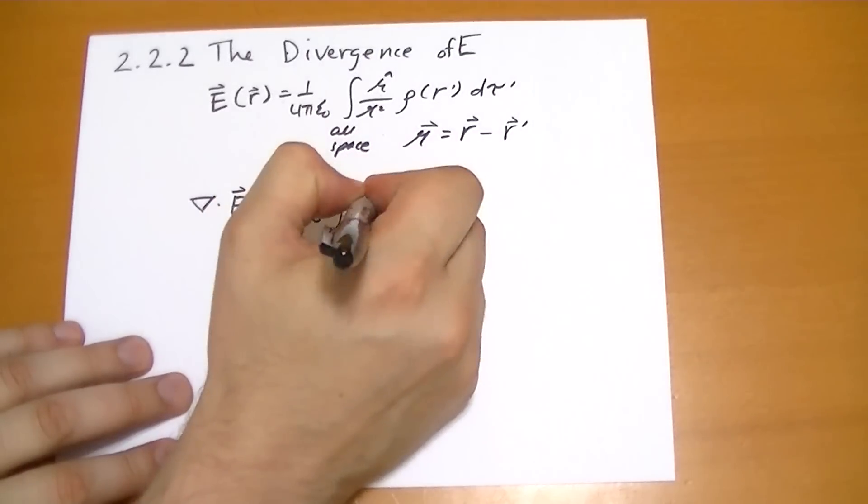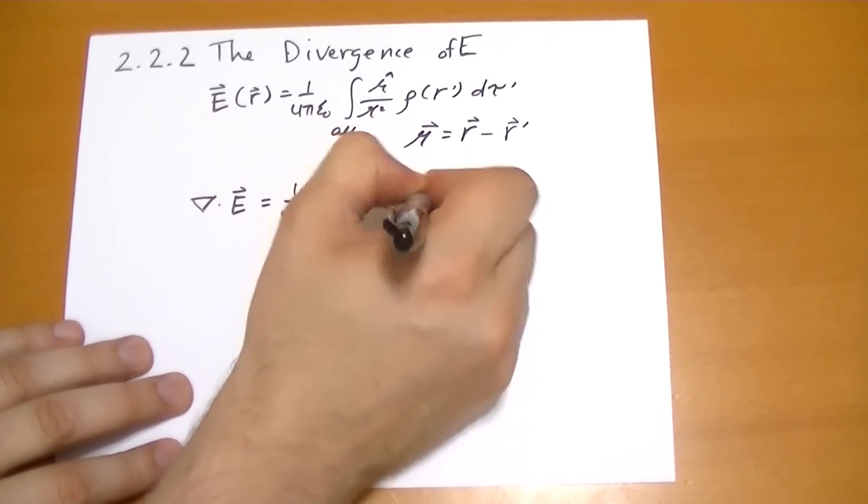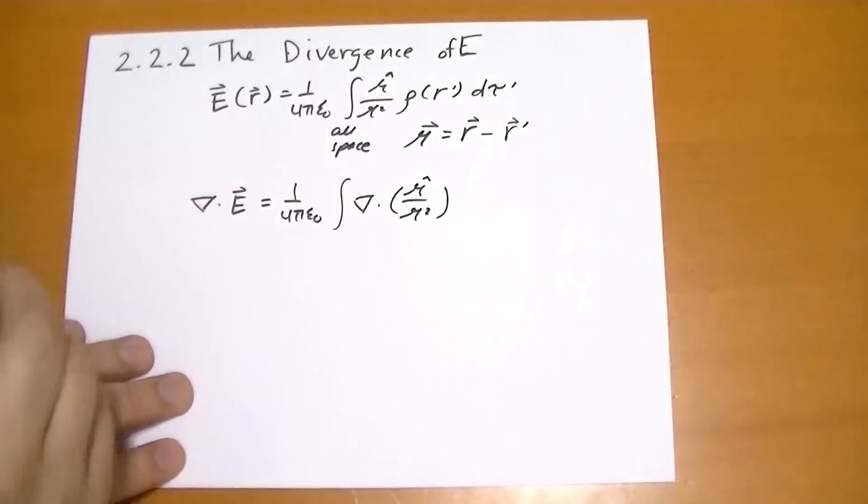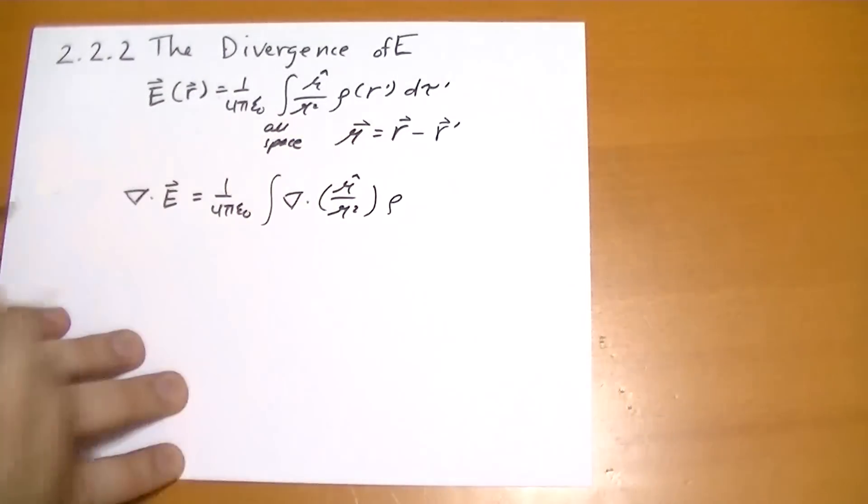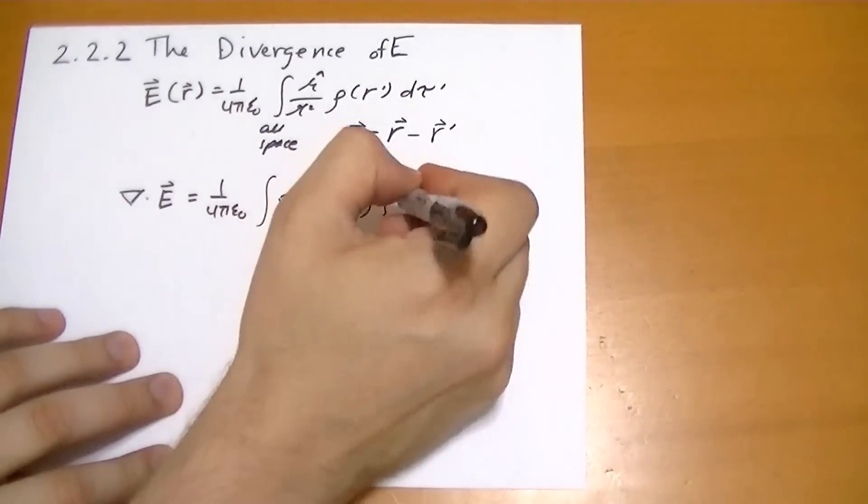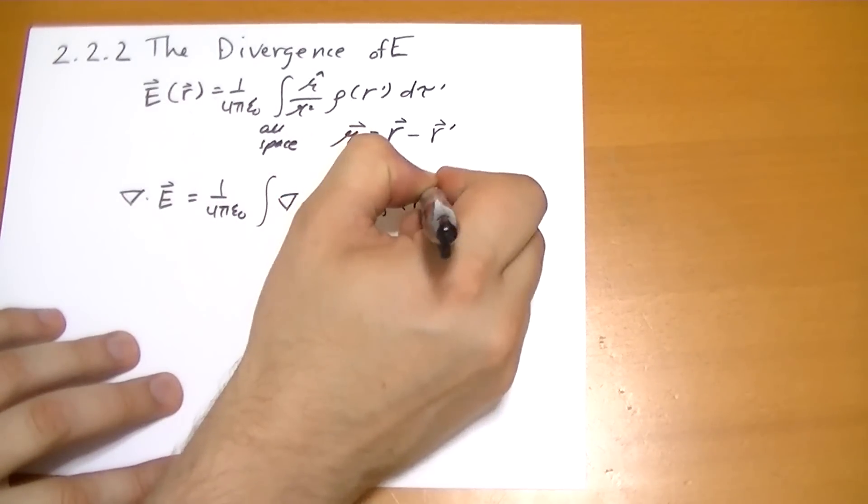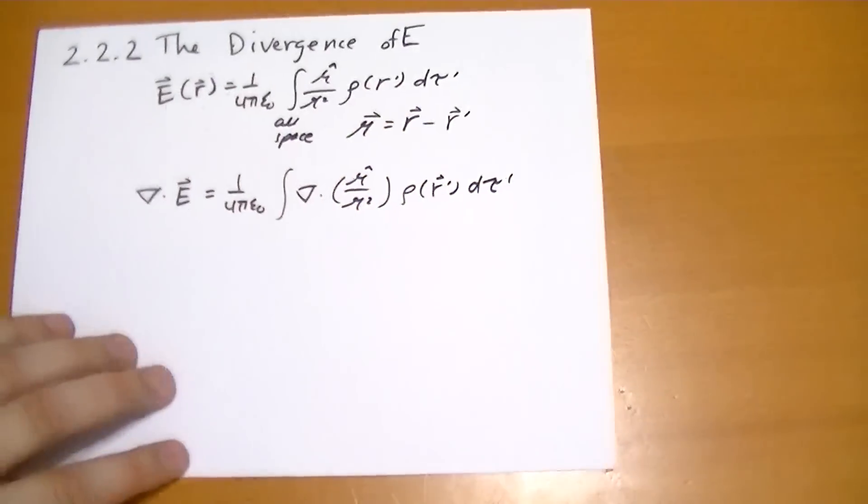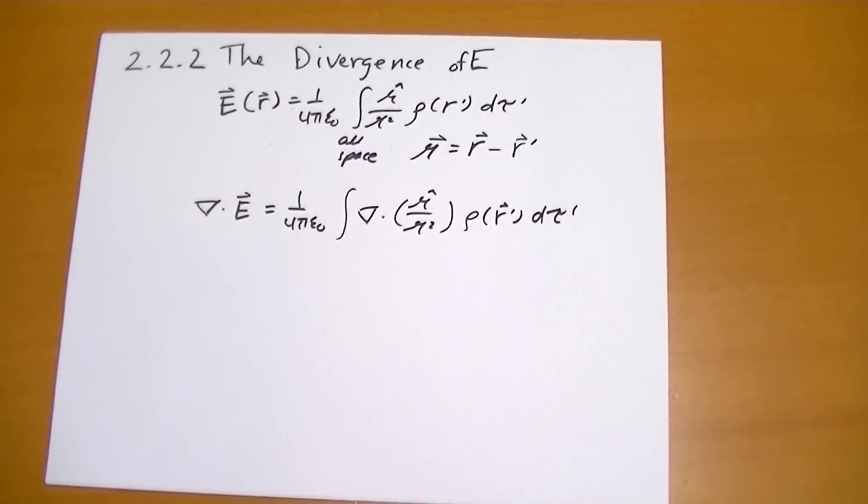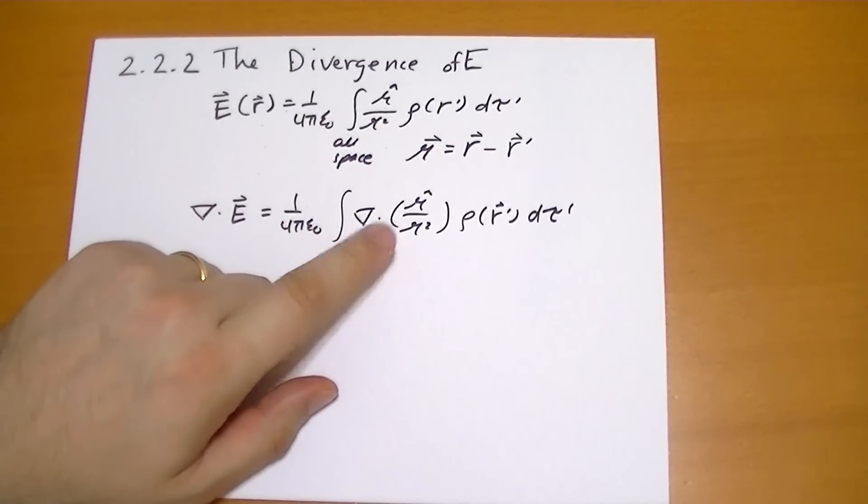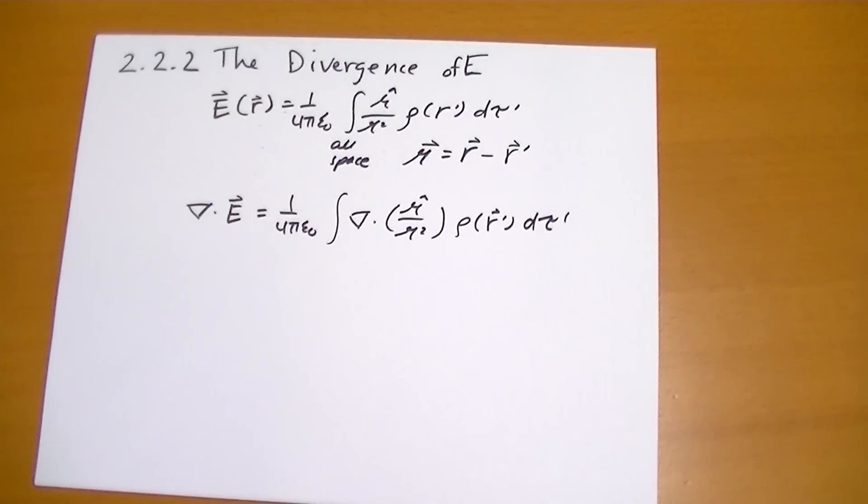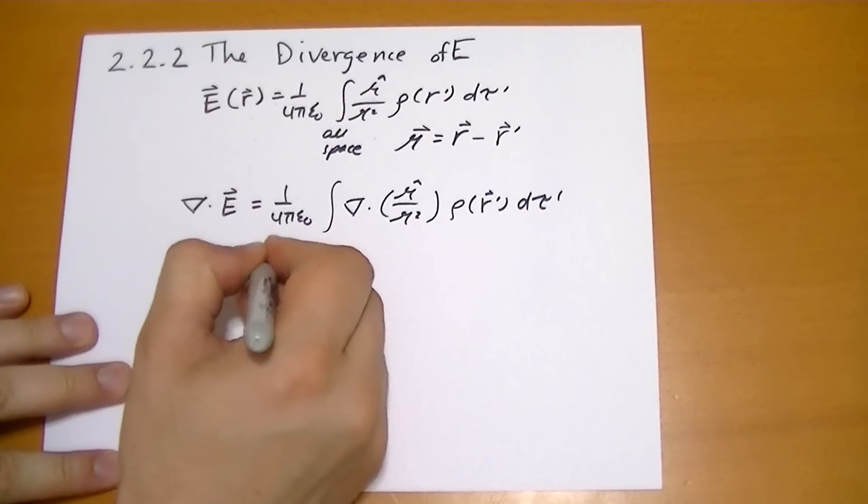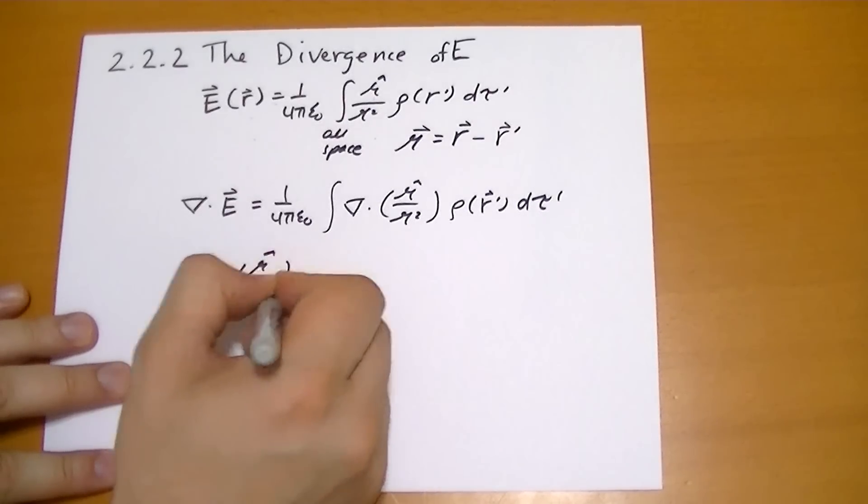And it's going to be the divergence of this r-hat over r-squared, and times the scalar quantity of the rho of r-prime vector d tau prime. So what do we do here? Why is the divergence only applying to this? Because this is the only vector quantity in this part of the equation. Everything else is scalar. It's going to walk out of this divergence calculation as some coefficient.